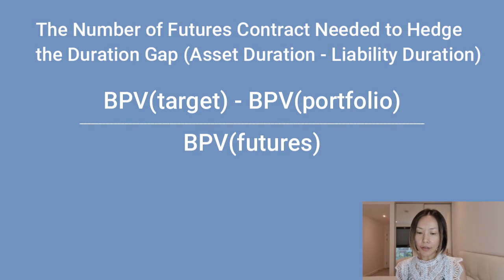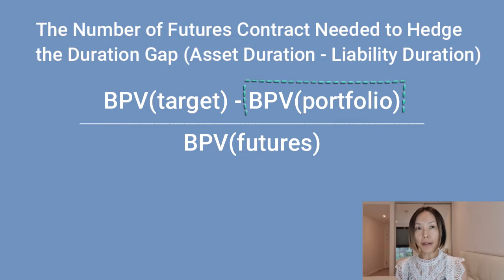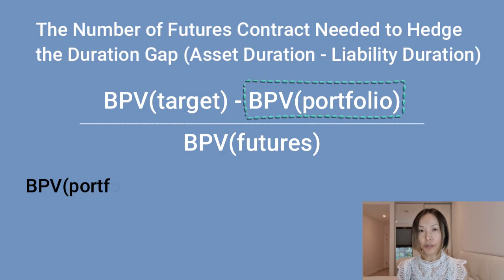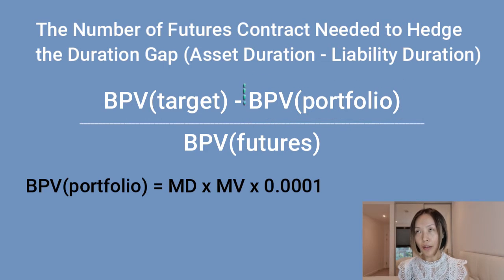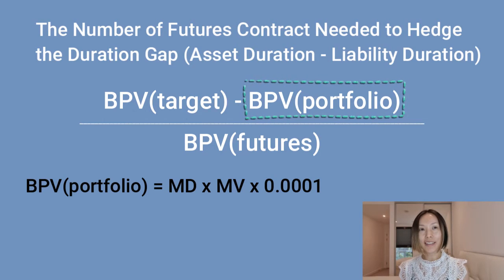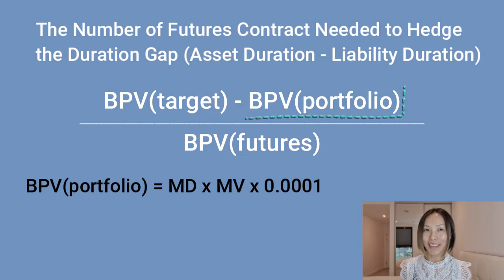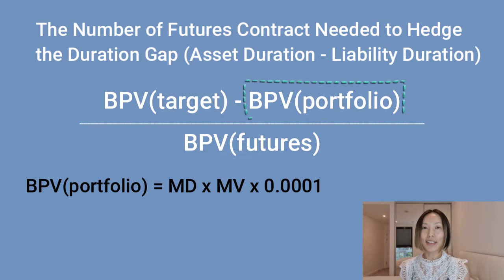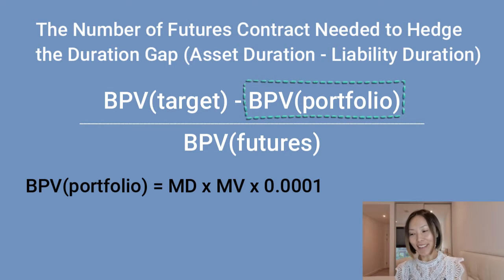In the numerator you need to use the basis point value, or BPV. BPV equals modified duration multiplied by the market value of your portfolio, multiplied by one basis point — which is 0.0001, i.e., one percent of one percent.